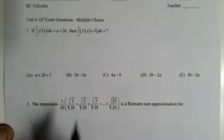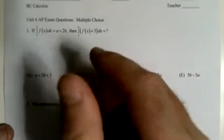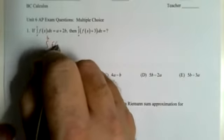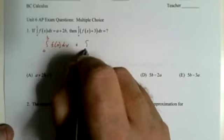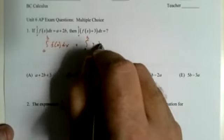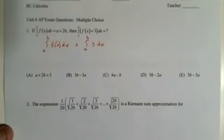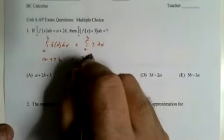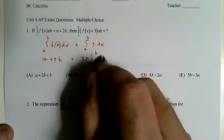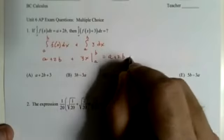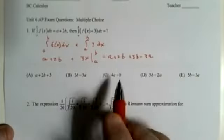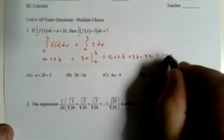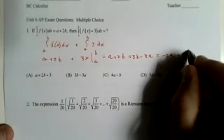Integral of A to B is A plus 2B. Let's break it down into integral A to B, f of x, dx, plus integral A to B, 3, dx. This is where you really find out if people know what they're talking about. Because this is A plus 2B. This is 3x. A to B, A plus 2B, plus 3B, minus 3A. 2B plus 3B, A minus 3A, minus 2A, plus 5B.